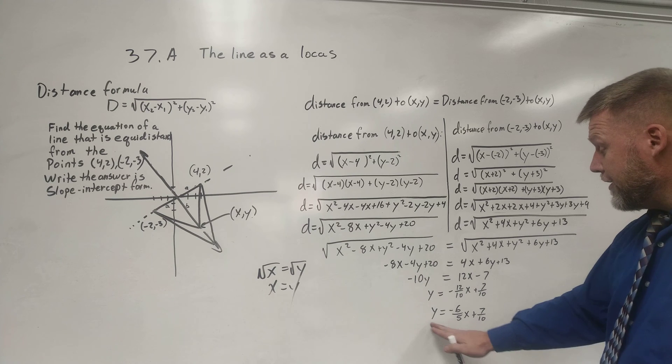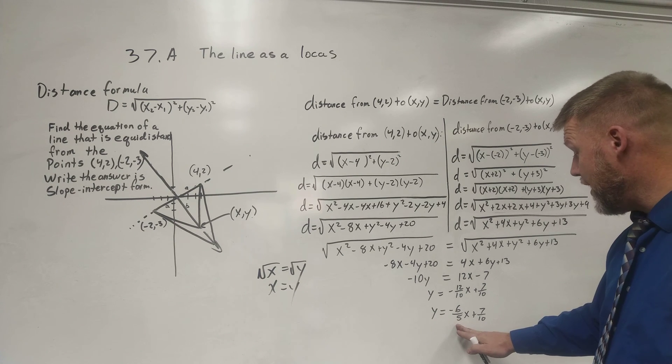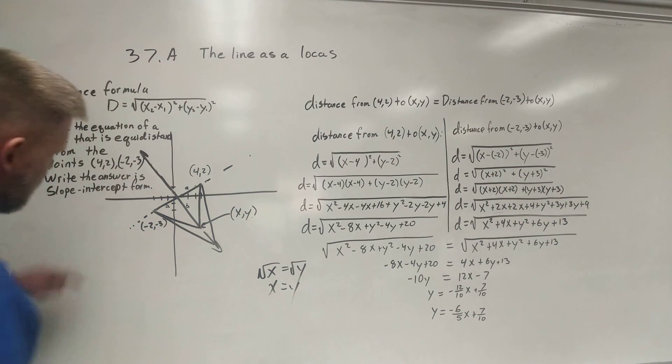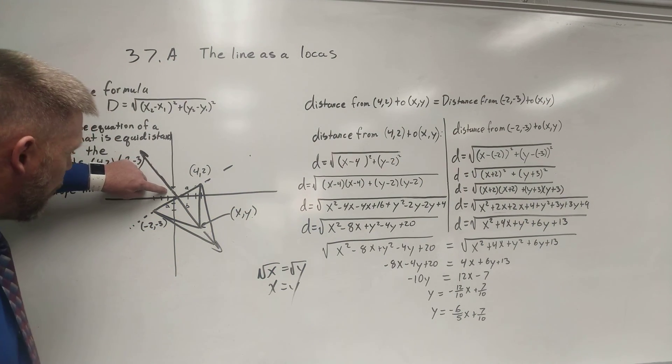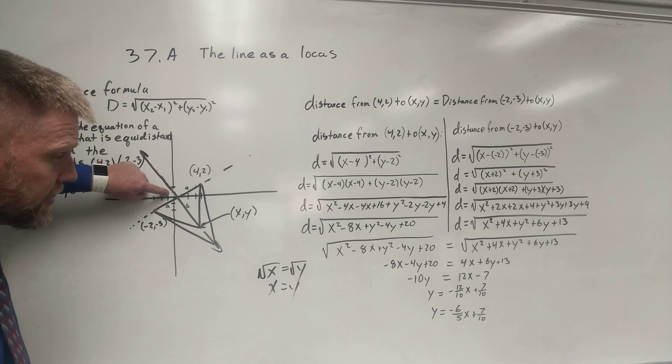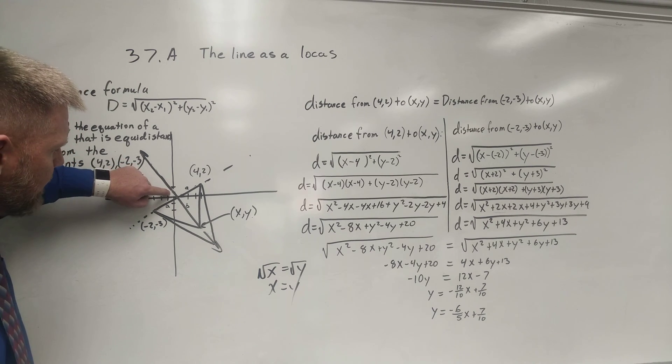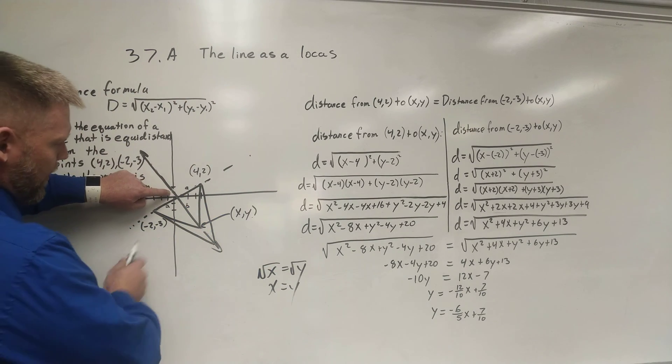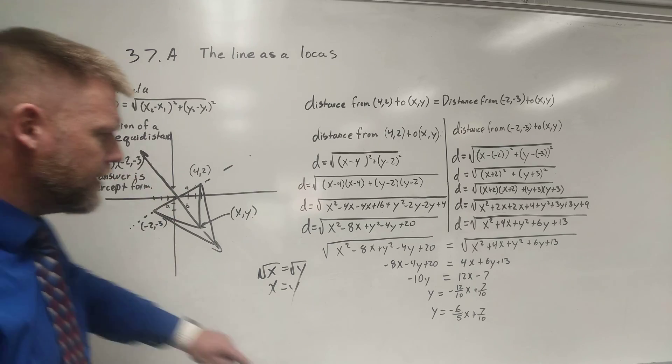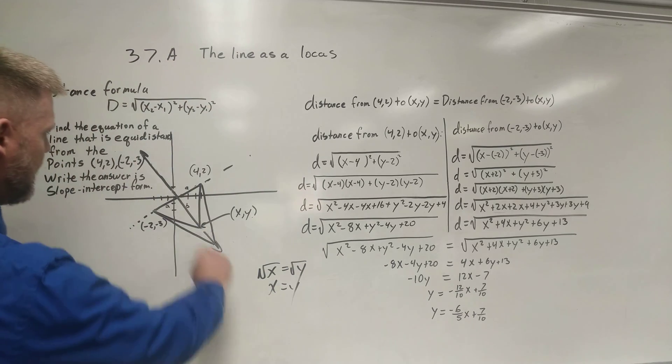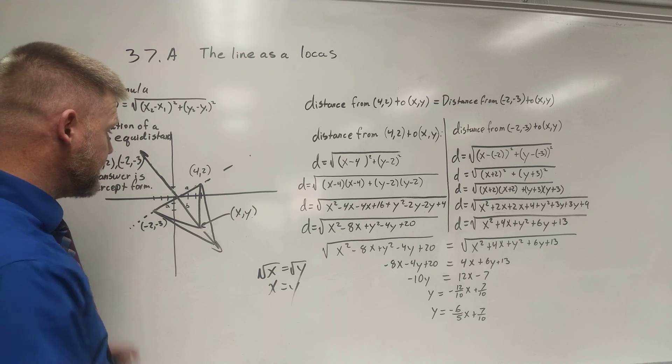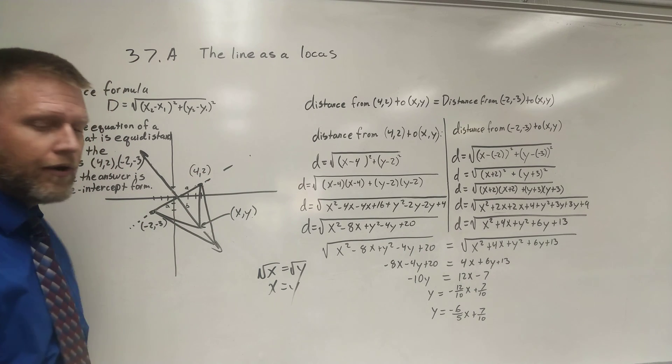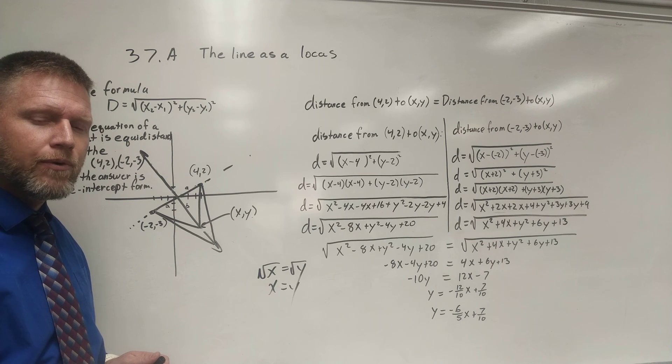Now, is this a logical answer? y equals negative 6 fifths of x plus 7 over 10? Well, 7 over 10 is less than 1. I've got a big fat line right here. But if it wasn't so overly fat, that's about 7 tenths. That looks good for my y-intercept. And is it a negative slope going down 6 for every 5 in the run? And I would say, yeah, that is. And this is the equation of the line here. And that line is equidistant from these two points. This one here and this one here. Always the same distance away from the two points.